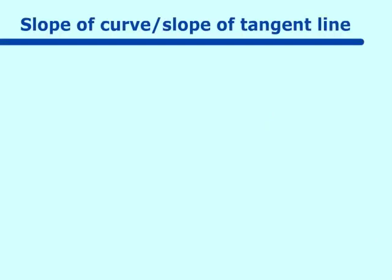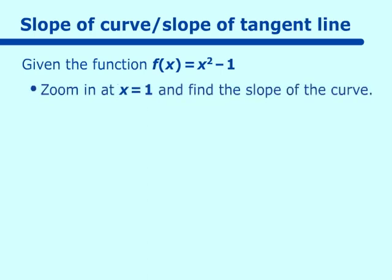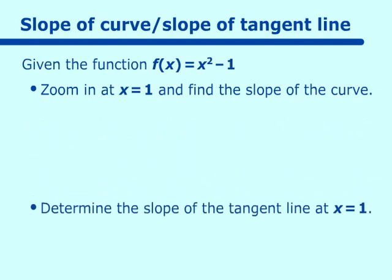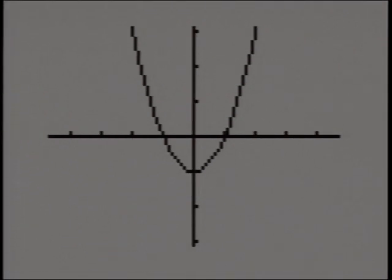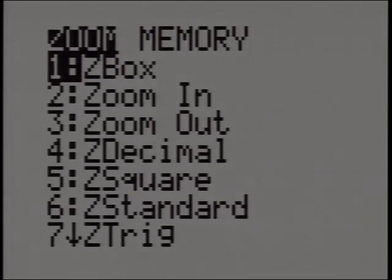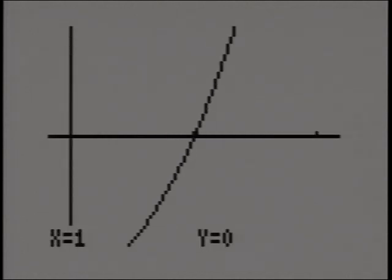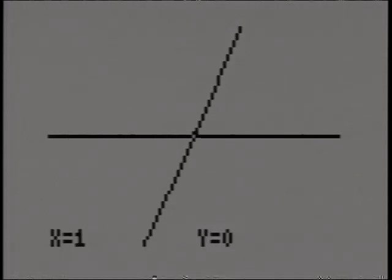Let's determine the slope of our curve, or the slope of the tangent line, at a point. When we zoom in on a function, we are finding the slope of the curve, but we are also finding the slope of the tangent line, because the tangent line and the curve intersect at a very small spot. So let's look at our function f(x) = x² - 1, and zoom in at x = 1 to find the slope of the curve there. As we zoom in, the curve straightens out — it looks like a line — and that's the slope of the tangent line at x = 1.